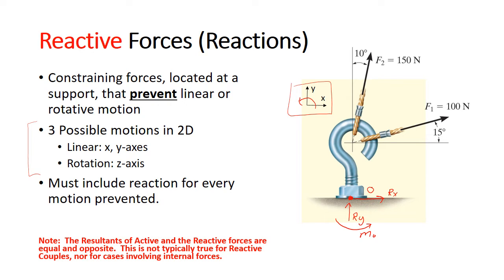One thing you might notice when doing problems such as this is that the resultant of F1 and F2 will end up being the same as the resultant of Rx and Ry. This is typically true, but it's not true for couples such as MO, nor is it true when we have cases involving internal forces.